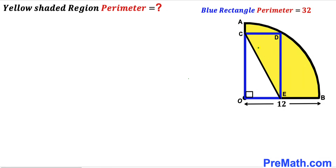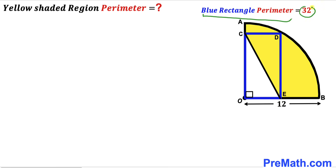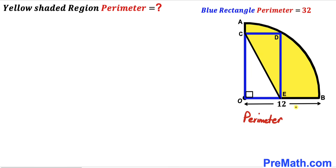Welcome to PreMath. In this video we have a blue rectangle OCDE fully inscribed in a quarter circle with center O. OB is the radius of this quarter circle and it is 12 units. The blue rectangle perimeter is given as 32 units, CE is the diagonal of this blue rectangle, and our task is to calculate the perimeter of this yellow shaded region shown here.